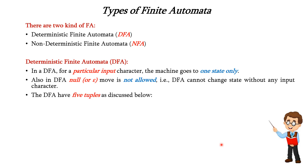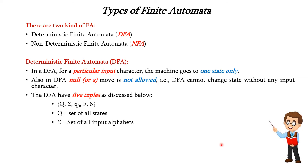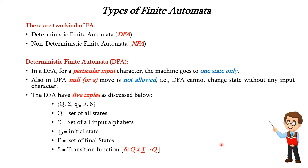The DFA has 5 tuples similar to finite automata: Q, Sigma, Q0, F, and Delta. Q is the set of all states, Sigma is the set of all input alphabets, Q0 is the initial state, F is the set of final states, and Delta is the transition function, represented as Q × Sigma → Q, where Q is the current state and Sigma is the input alphabet, and it transitions to the next state Q.